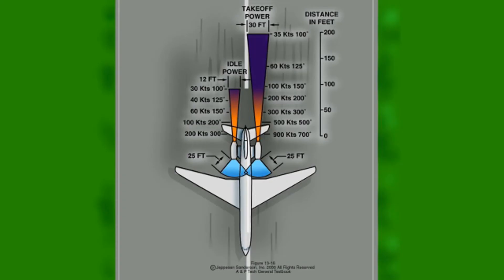When working in the vicinity of an operating turbine engine, you must remain at least 25 feet from in front of a running jet engine, at least 100 feet behind an idling turbine engine, and at least 200 feet behind a turbine engine running at takeoff power.